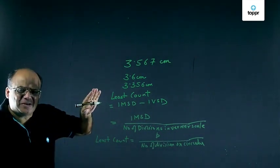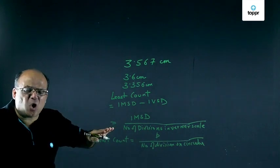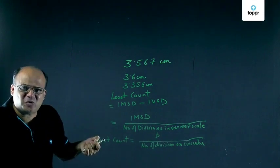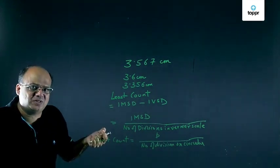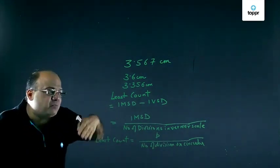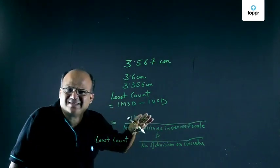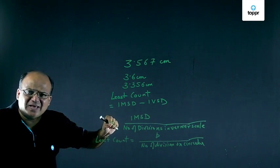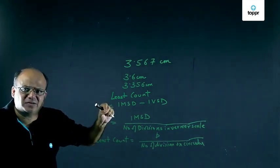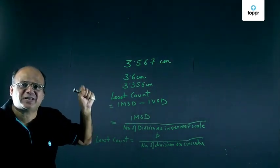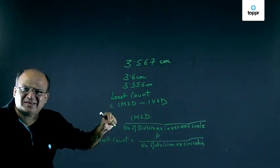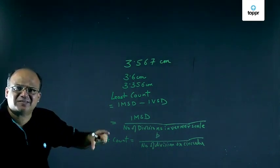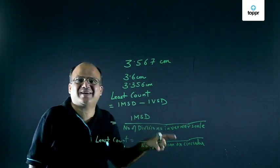Vernier caliper, screw gauge all can have some zero errors. When the reading is supposed to be 0, it is not exactly 0. Zero error can be both positive as well as negative. So you should look at the reading and subtract the zero error. The zero error has to be put with the correct sign. If positive zero error, put a plus sign. If it is negative zero error, put a minus sign. And from the reading, subtract that zero error to get the correct reading.